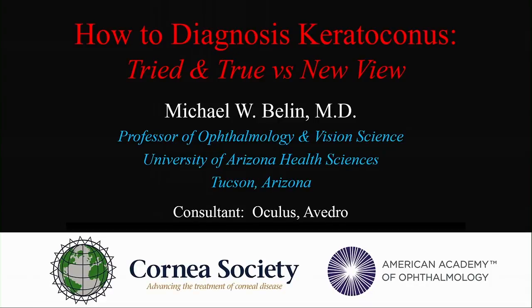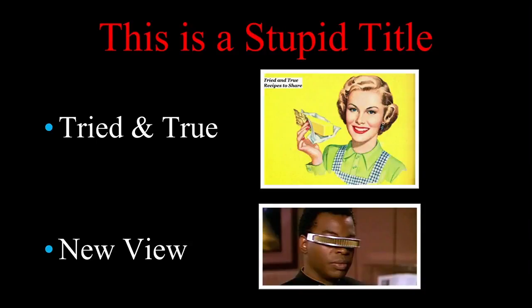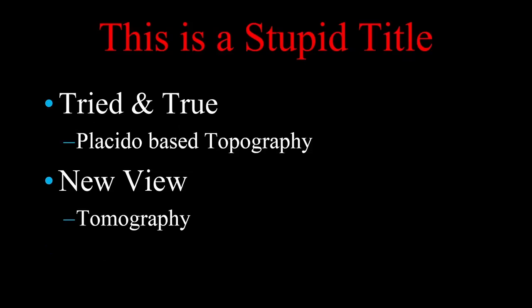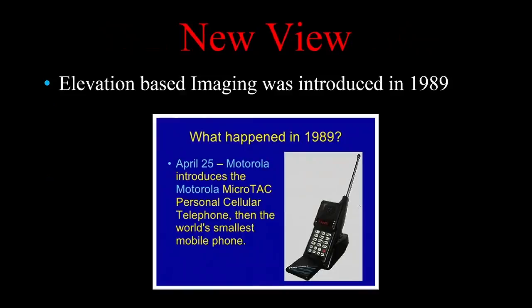I was given the title, and when I was first given this title, I was honored to speak at Cornea de Jennifer. However, I gave it some thought and I really thought this is a stupid title — tried and true or new view. I have no idea what you really meant. I'm guessing tried and true is supposed to be placido-based topography, and new view is supposed to be tomography. But if you really think about it, some type of tomographic imaging was available since 1989. It's not exactly new view any longer.